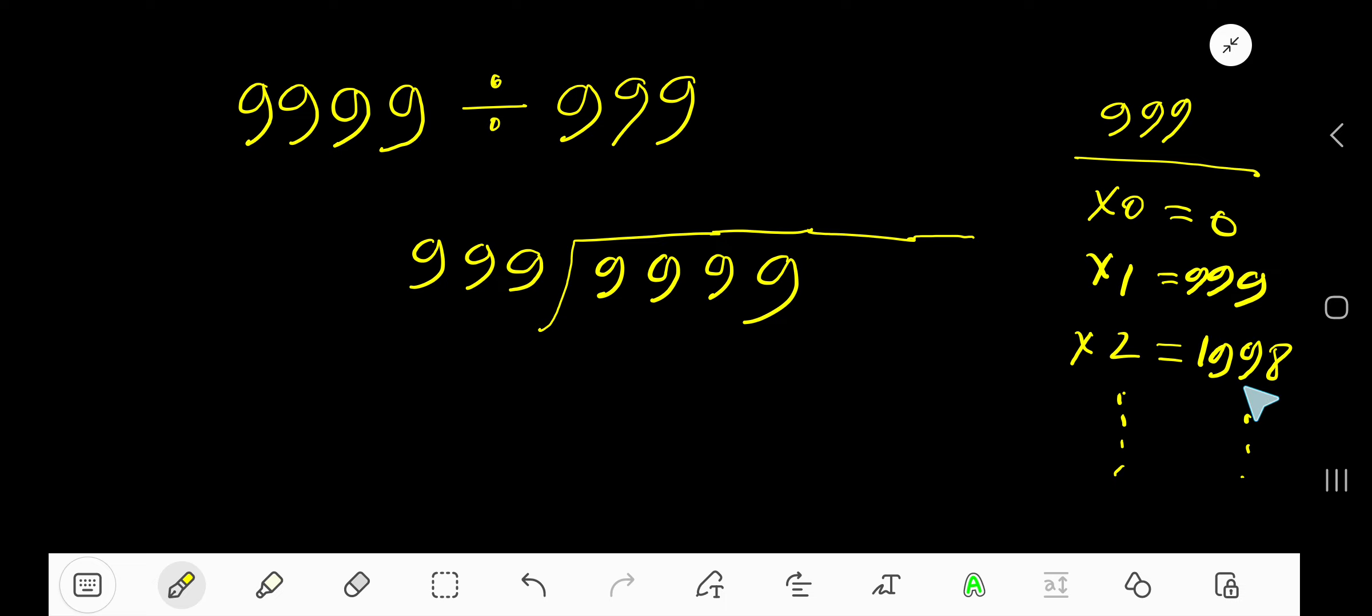999 goes into this 9 how many times? Actually, this 9 is less than 999, so consider up to the next digit. This 99 we are getting, so 999 goes into 99 how many times? 0 times, since this is less than this. So consider up to this: 999 goes into 999 how many times? 1 times. 1 times 999 equals 999, so if you subtract you are getting 0. Bring down this 9.